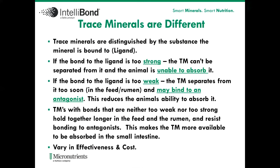How are trace minerals different? Trace minerals are really distinguished by the substance the mineral is bound to, and this we call the ligand. If the bond to this ligand is too strong, the trace mineral can't be separated from it and the animal is unable to absorb it. If the bond is too weak, the trace mineral separates from the ligand too soon — potentially in the feed, in the feed bag, or in the rumen — where it may bind with an antagonist, reducing the animal's ability to absorb it. So the goal around our trace minerals should be neither too weak nor too strong, so they can hold together in the feed and in the rumen, resist bonding to antagonists, bypass the rumen, and get to the small intestine where they can be absorbed. These sources are also going to vary in their effectiveness to the animal and obviously their cost as well.